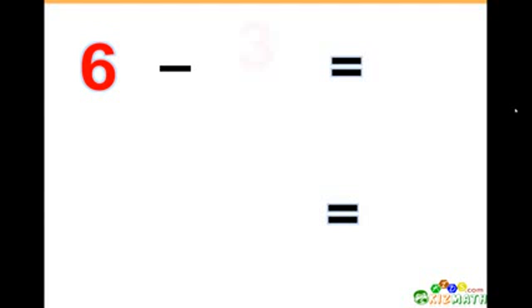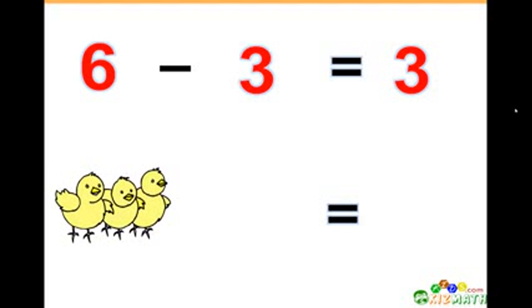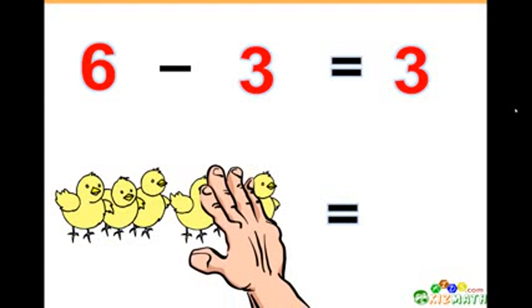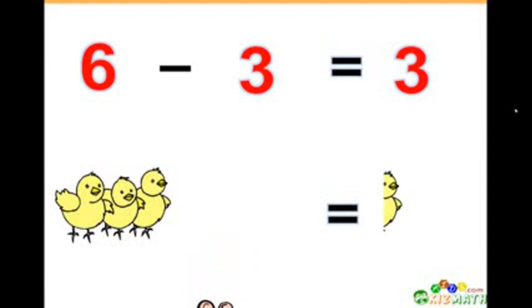Six minus three equals three. We have six birds. If we take away three of those birds, there are only three birds left.